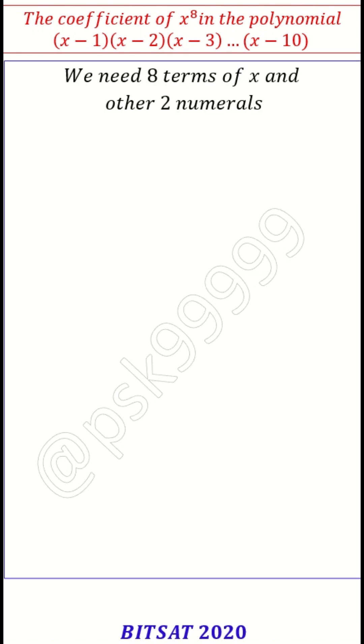If you write it, the coefficient of x to the power 8 is 1 into 2, 1 into 3, up to 1 into 10. Anything is possible because I need two numerals from 1 to 10 I am picking. Then other thing is 2 into 3, 2 into 4, up to 2 into 10.